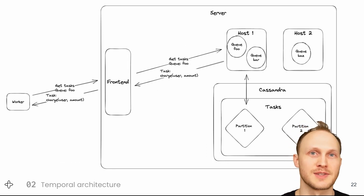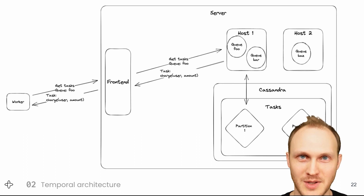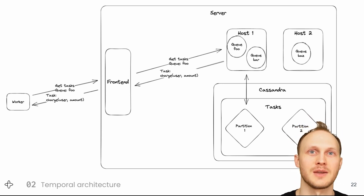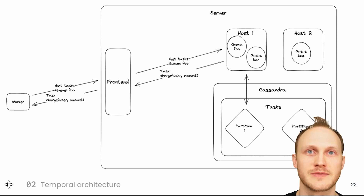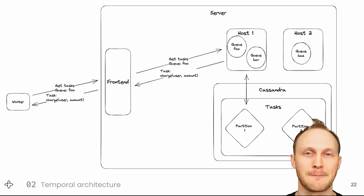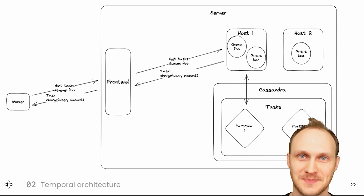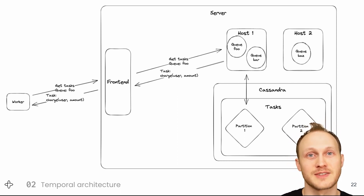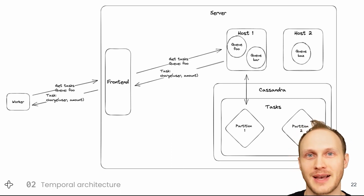So now when a worker asks the front-end service for new work on task queue foo, it will get forwarded to host 1, which will take the charge task from partition 1. When the worker receives the charge task, it will call the charge function. If the function fails, the worker will report that back to the server. If it's something transient like a network error, the server will schedule the same task for a future time. If it's something permanent like a card expired error, the server will record that result and put a task on the queue to activate the subscription function, which will throw from the charge line. If the charge succeeds, the server will record the result and activate the subscription function passing the result.